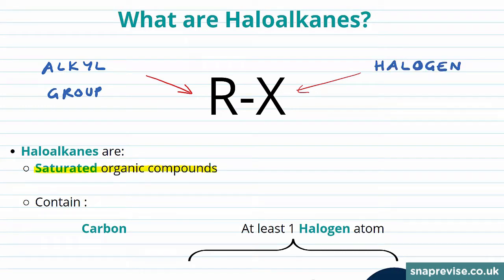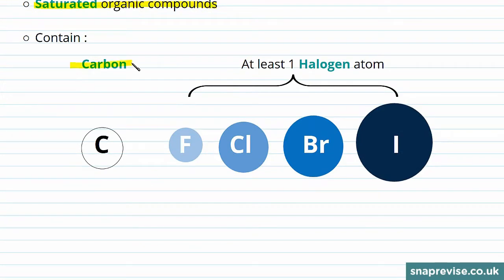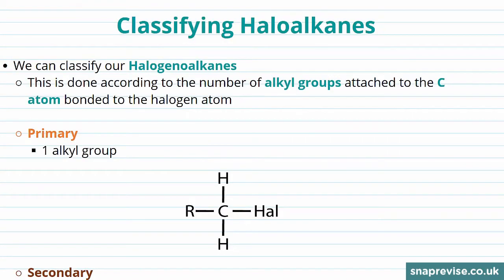If we take a closer look, we see that our haloalkanes contain carbon and at least one halogen atom — so at least one of fluorine, chlorine, bromine, or iodine. And we can classify our haloalkanes into primary, secondary, and tertiary haloalkanes. This is done according to the number of alkyl groups attached to the carbon atom that's bonded to our halogen atom.